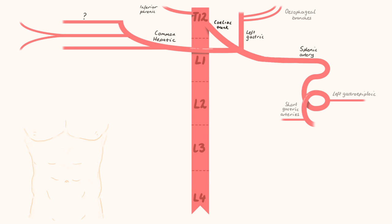From the common hepatic, we have three branches. One, the proper hepatic. Two, the gastroduodenal. And three, the right gastric. From the gastroduodenal, we have the right gastroepiploic and superior pancreaticoduodenal.